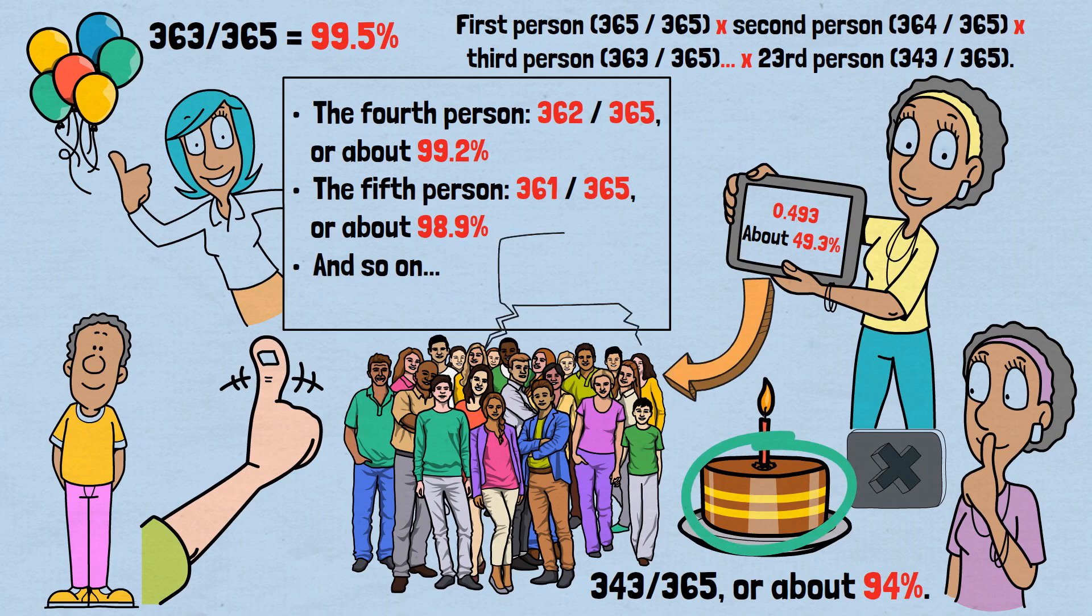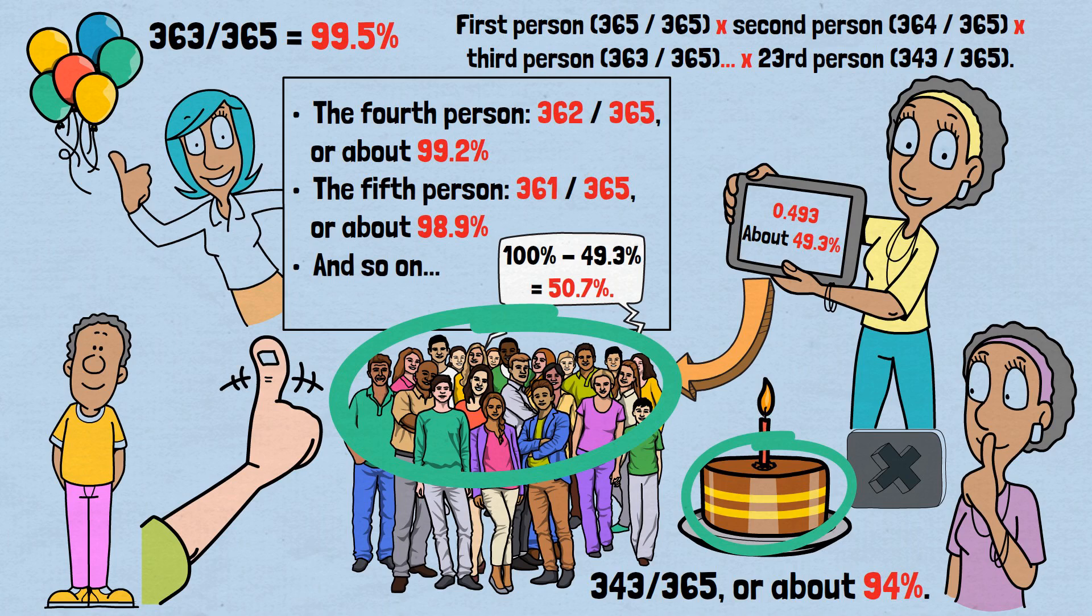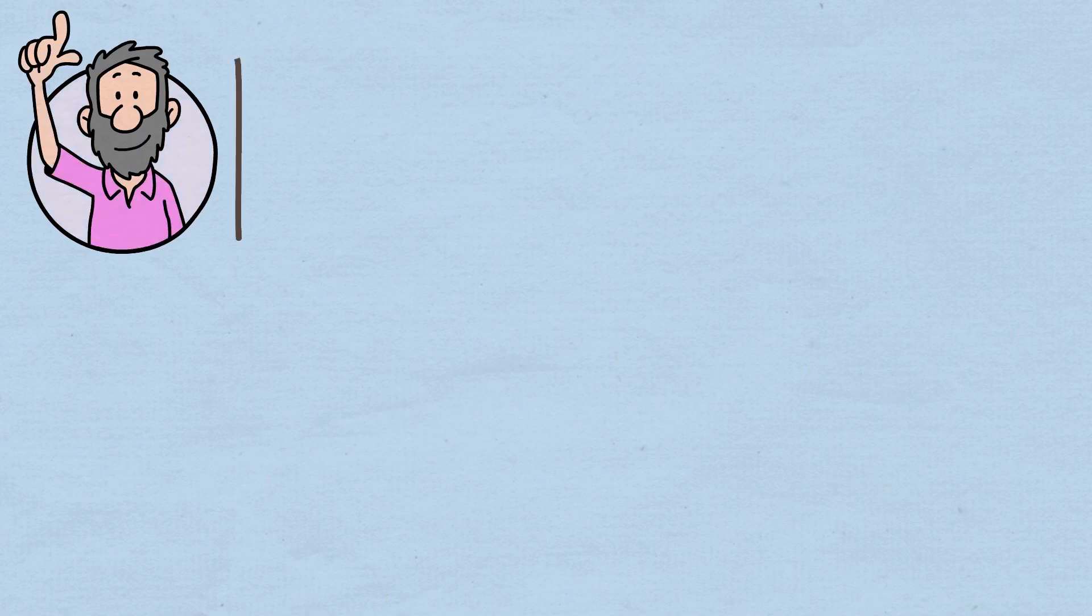Therefore, the probability that at least two people share a birthday is 100% minus 49.3%, which equals 50.7%. And there we have it. With just 23 people, it's more likely than not that at least two share a birthday. What if we keep adding more people to our room? The probability of finding a shared birthday skyrockets.